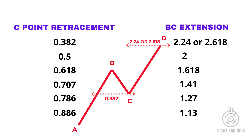For example, if the C point retraces the AB leg by 0.382, the chances are that the D point makes a deep correction and hits the 2.24 or 2.618 extensions of the BC leg.